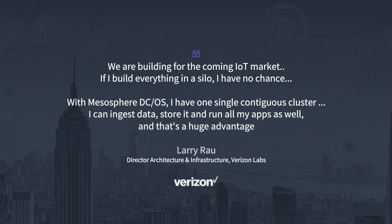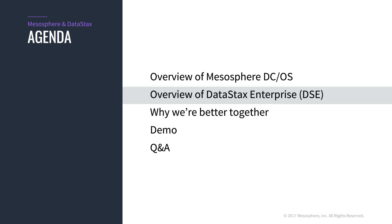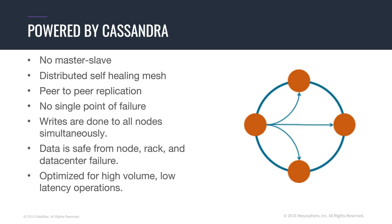Hopefully now you have a better understanding of the power of Mesosphere DCOS. Next, I'll hand it over to Catherine to cover DataStax Enterprise. At the core of DataStax Enterprise, we use Cassandra as our data store. Cassandra is different because it scales and it won't fail. Cassandra is a masterless, self-healing mesh with no single point of failure and true linear scalability.